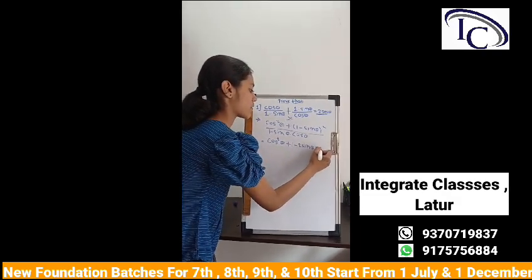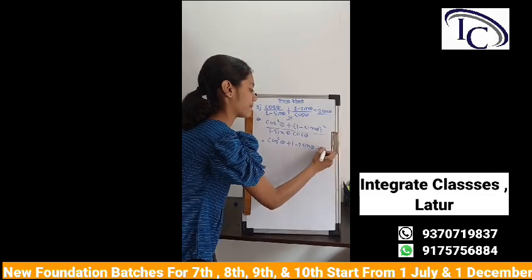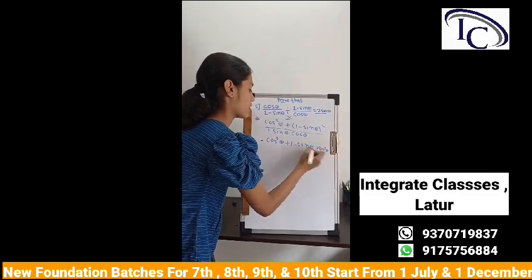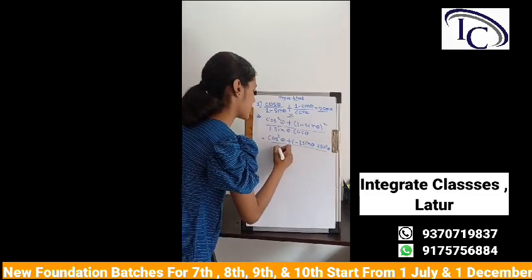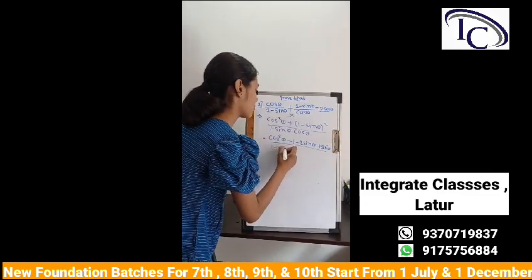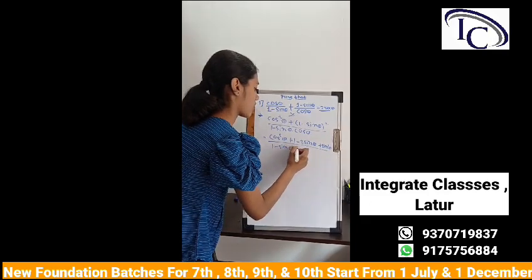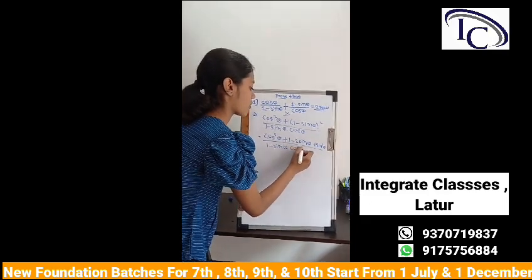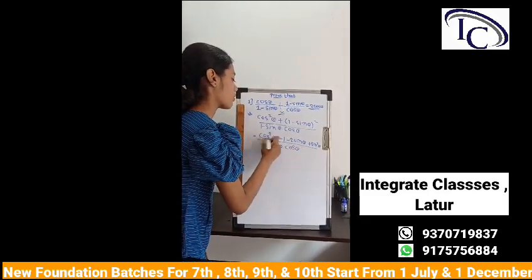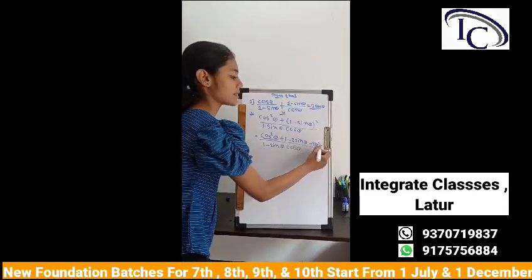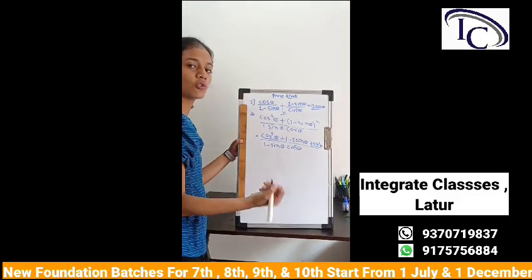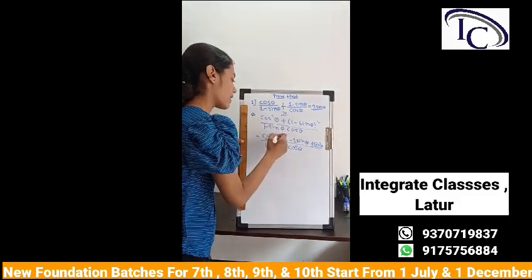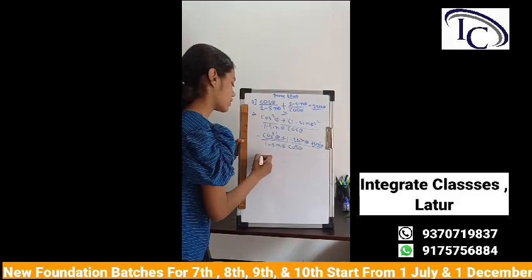This gives us cos²θ + sin²θ, divided by (1 − sin θ) into cos θ. By the first trigonometric identity, cos²θ + sin²θ = 1, so the numerator becomes 1 + 1, which equals 2.